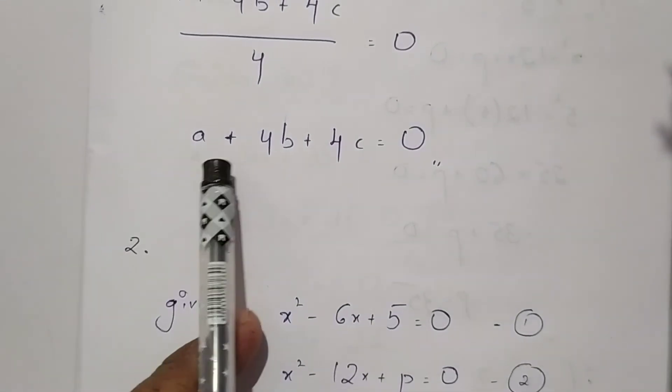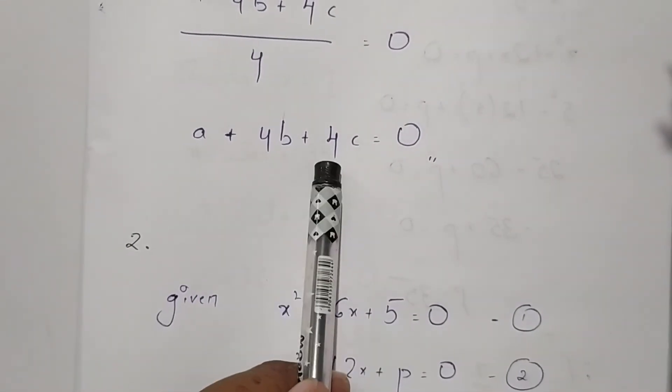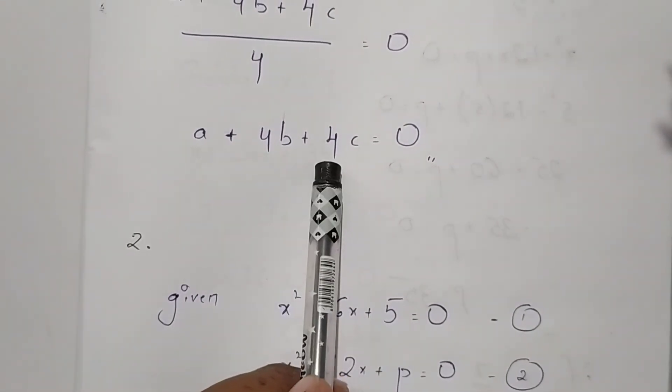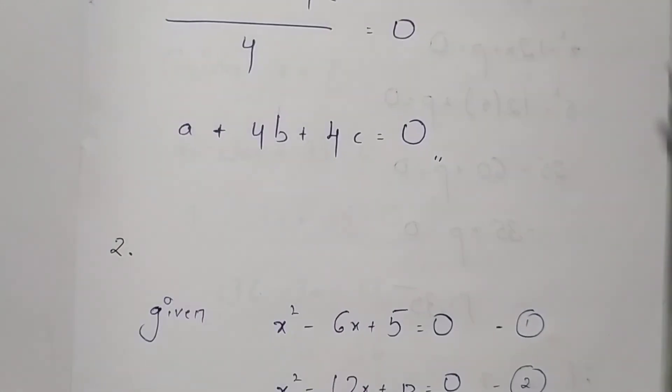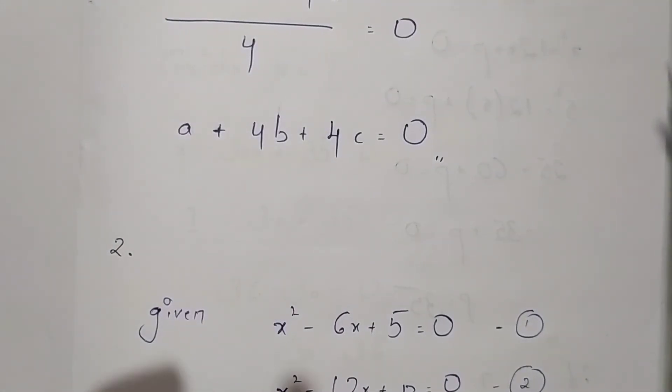Therefore we have finally proved that a + 4b + 4c = 0. Thank you.